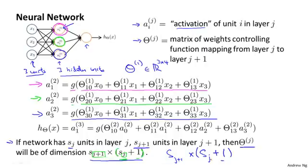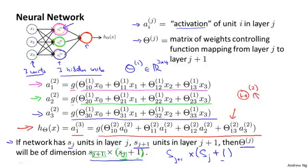Okay, so we've talked about what the three hidden units do to compute their values. Finally, in the output layer, we have one more unit which computes h of x, and that's equal, can also be written as a three one, and that's equal to this. And you notice that I've written this with a superscript two here, because theta superscript two is the matrix of parameters, or the matrix of weights, that controls the function that maps from the hidden units, that is the layer two units, to the one layer three unit, that is the output unit.